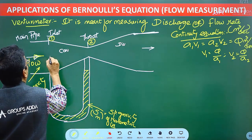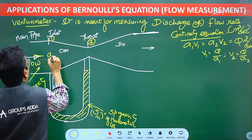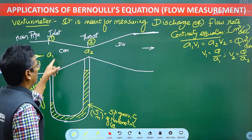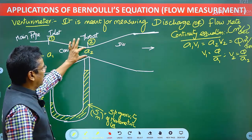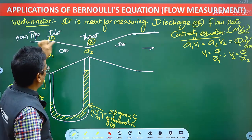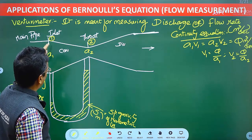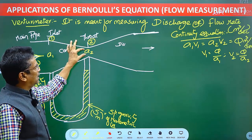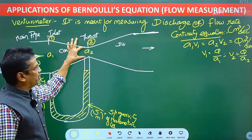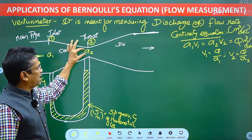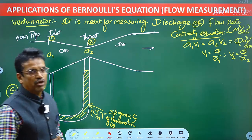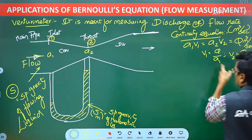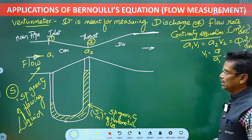The cross-sectional area at the inlet is A1, and at the throat is A2. A1 equals π/4 times D1 squared, and A2 equals π/4 times D2 squared. D1 is the inlet diameter and D2 is the throat diameter. The throat has the minimum cross-sectional area. So A2 is the cross-sectional area at the throat, and A1 is the cross-sectional area at the inlet.